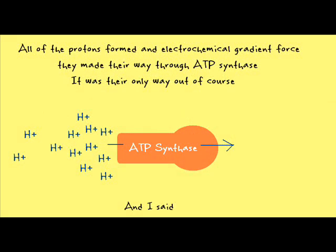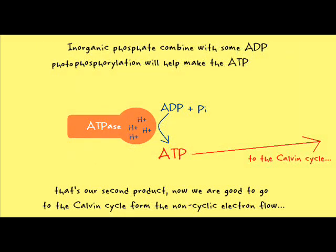All of the protons formed an electrochemical gradient force. They made their way through ATP synthase — it was their only way out, of course. And inorganic phosphate combined with some ADP — photophosphorylation will help make the ATP.